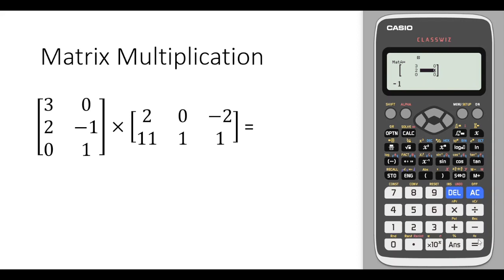We press AC to save and now select option and we define the second matrix by selecting one and two for matrix B.